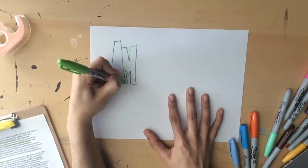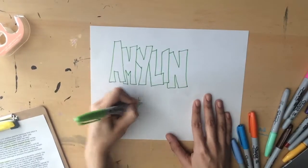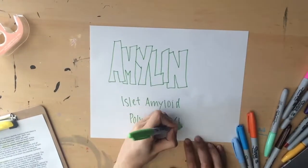Amylin or islet amyloid polypeptide, IAPP, is a 37-residue peptide hormone that plays a role in glycemic regulation.